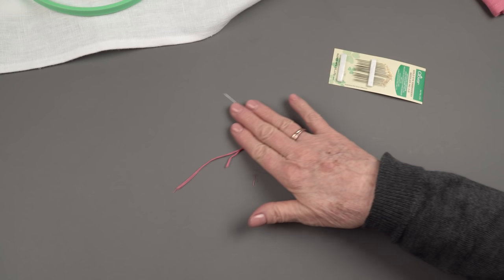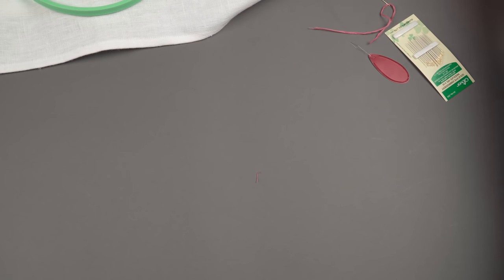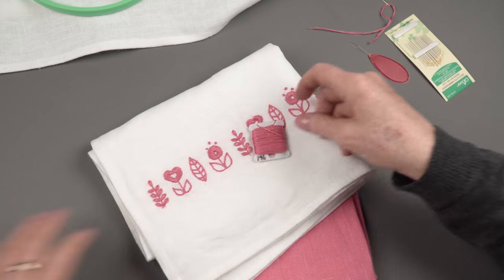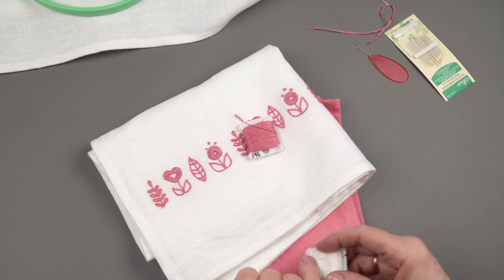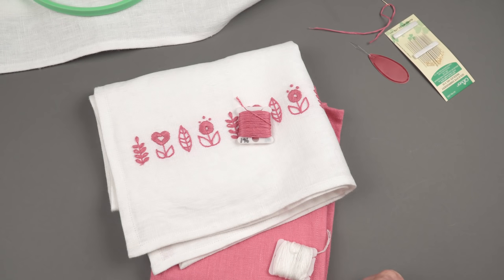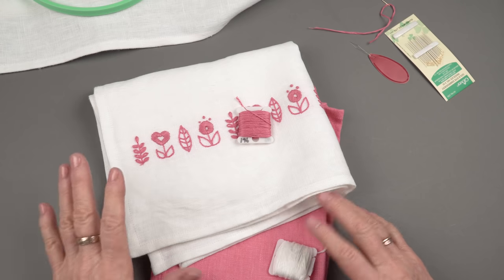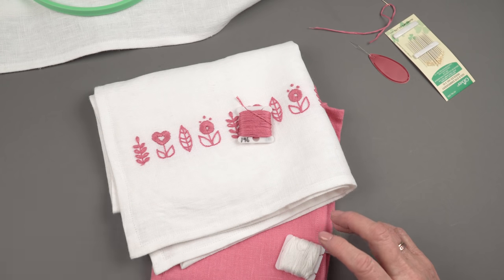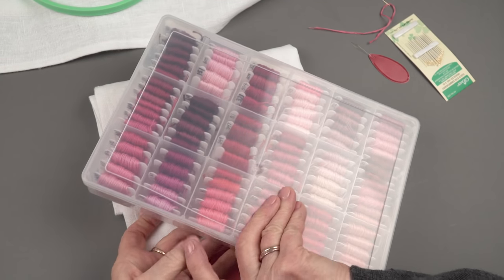Floss comes in many, many colors. We chose to use for our towels the pink for the white and the white for the pink. But there's many colors. In this one brand alone, DMC, there's over 457 colors, something like that. An amazing assortment.